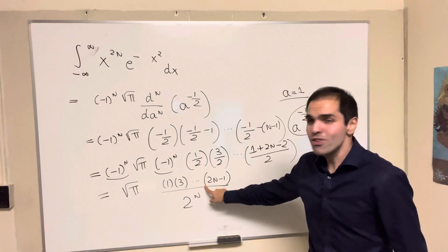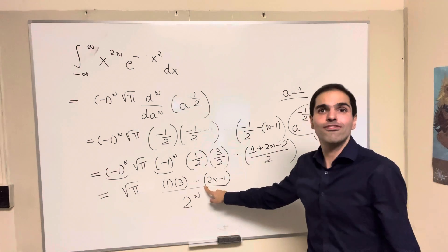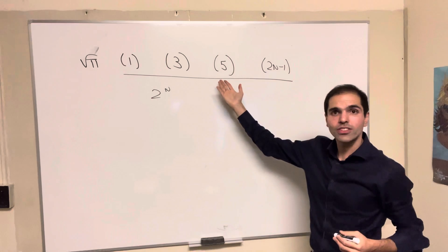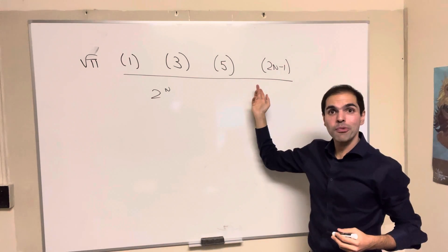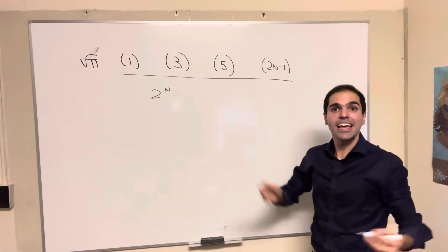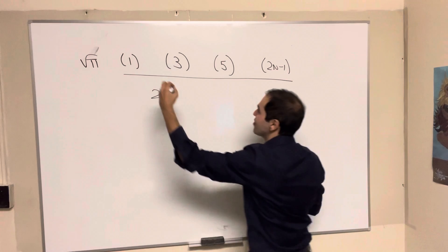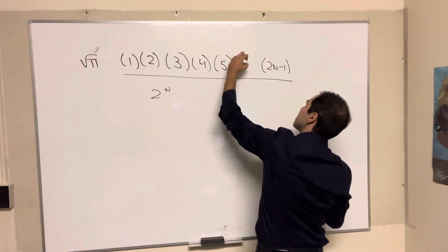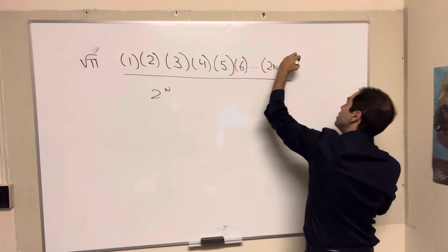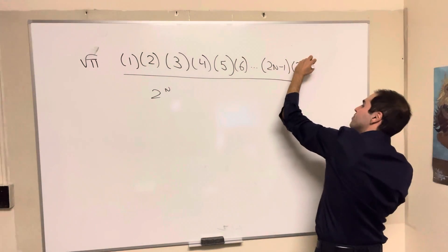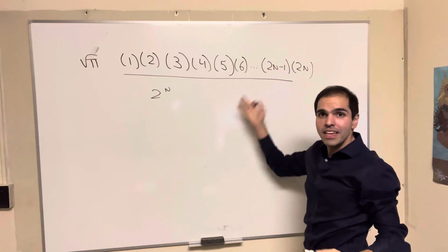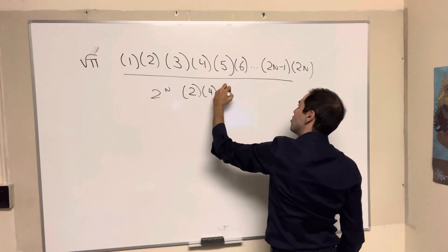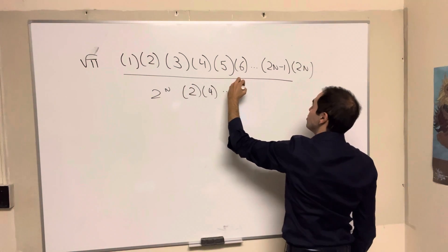But we can actually write this even further in terms of factorials in a very neat way. Because what do you do? You have all those odd numbers. Well, just interlace all the even numbers as well. So do 2, 4, 6, up to, interestingly, 2n. And well, to make this valid, you also have to divide by all those even numbers. 2, 4, up to 2n.